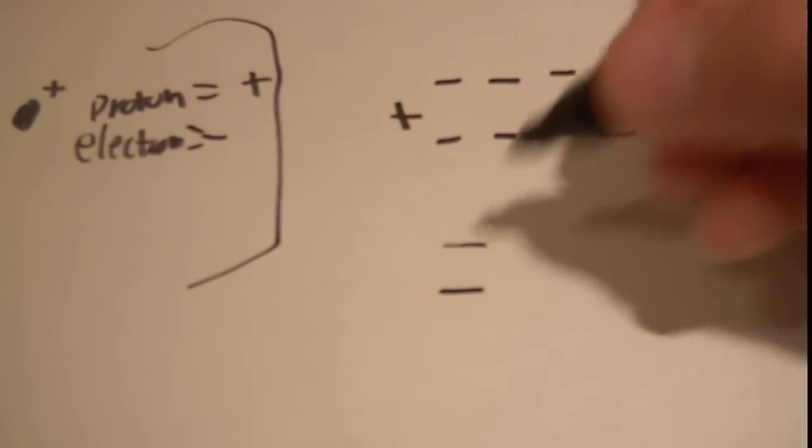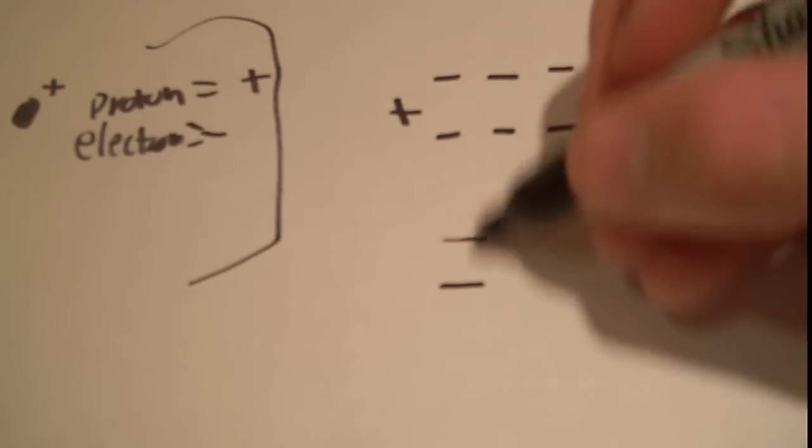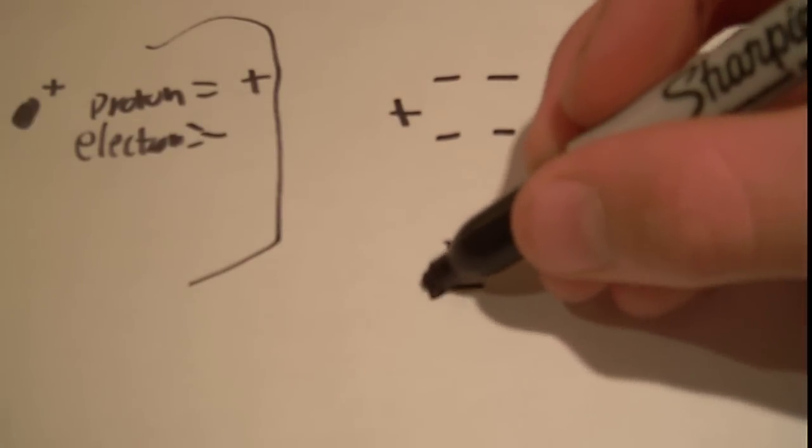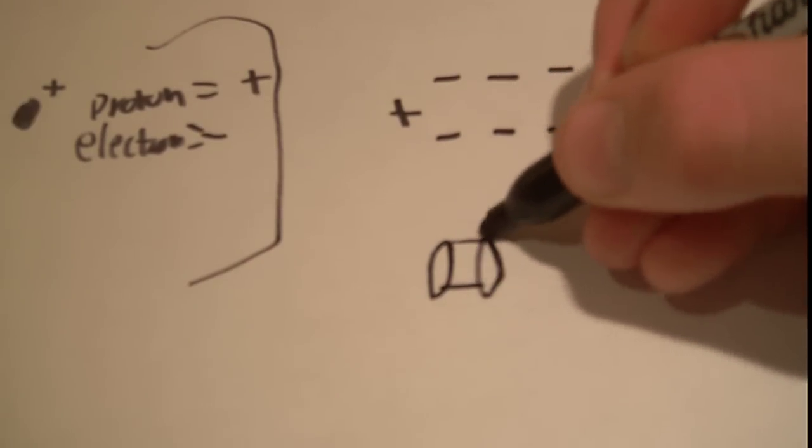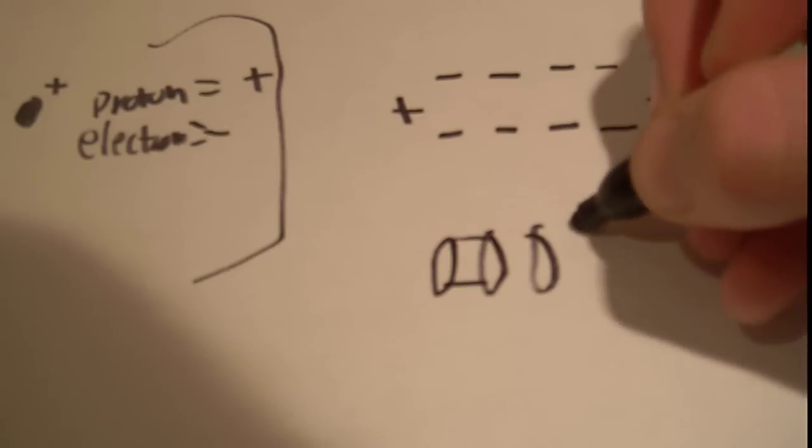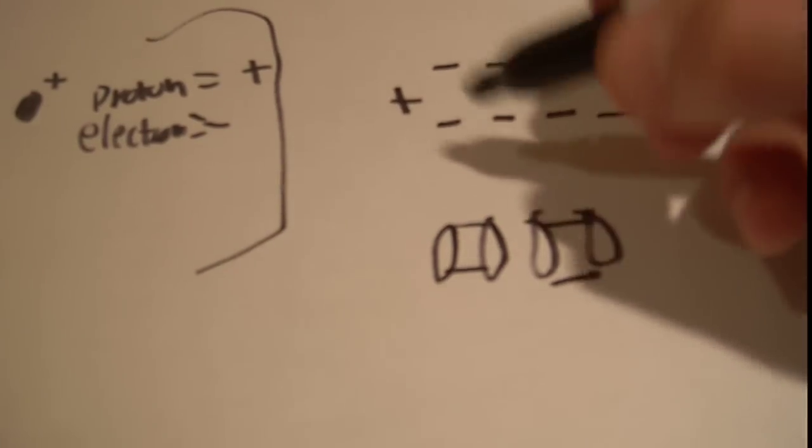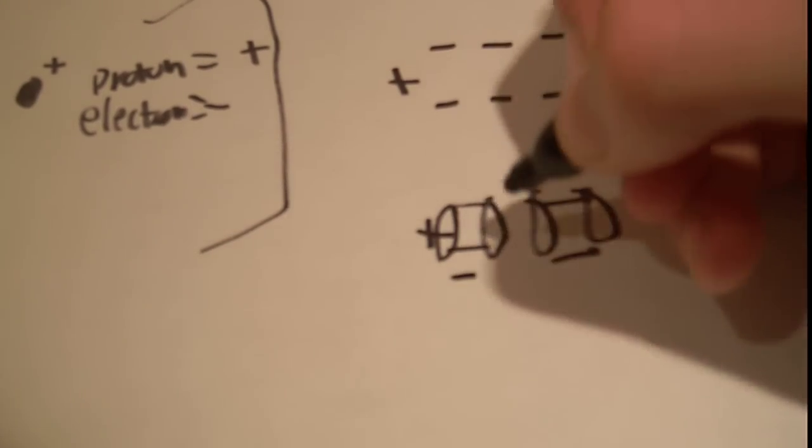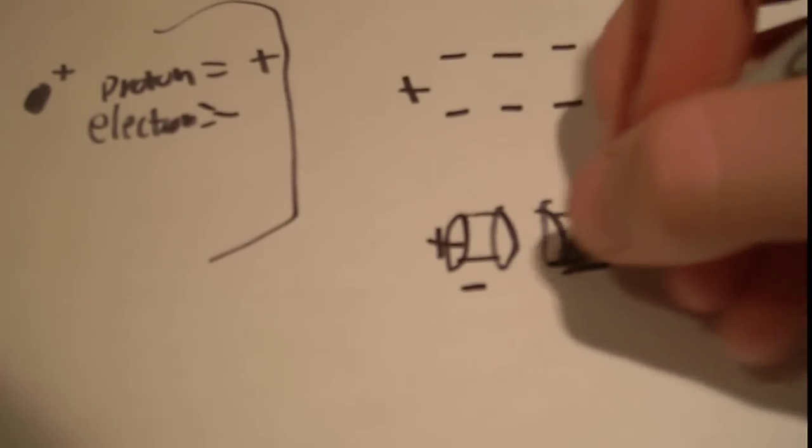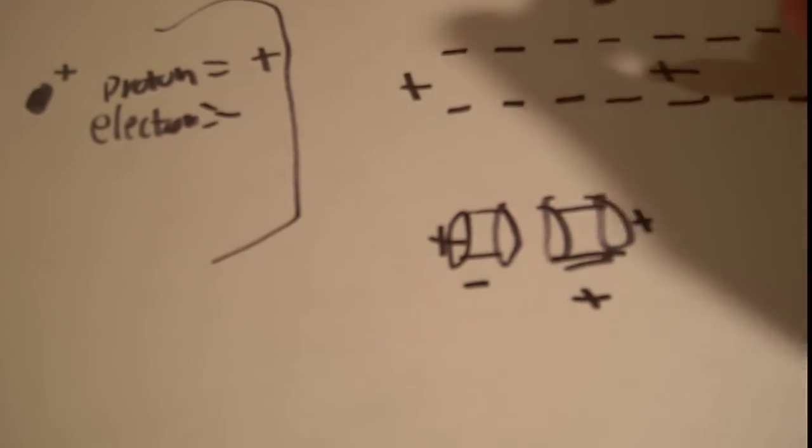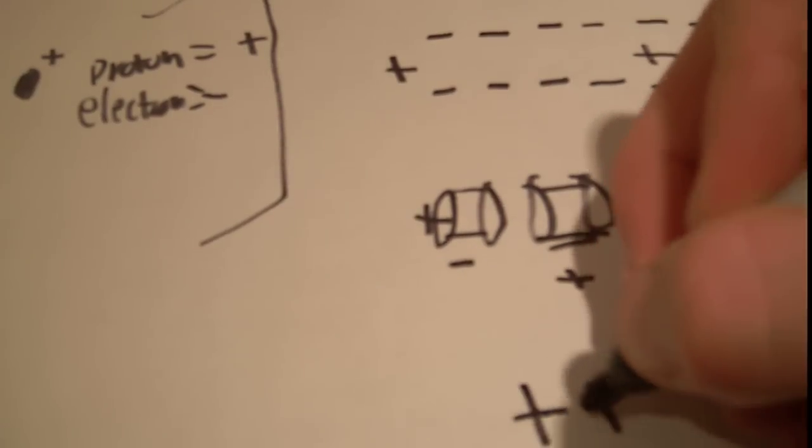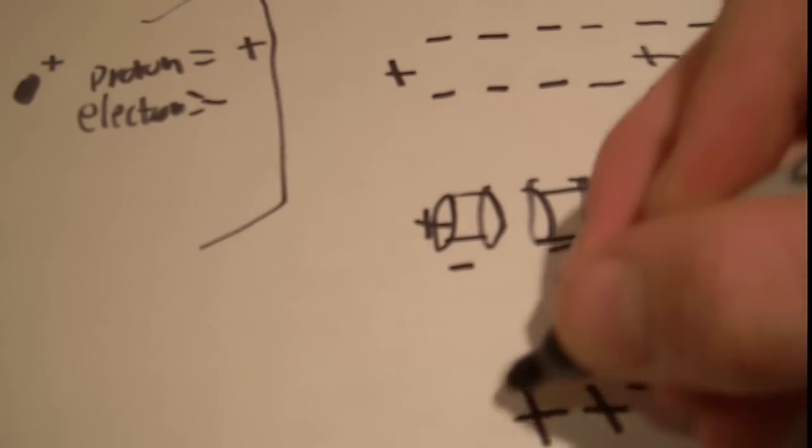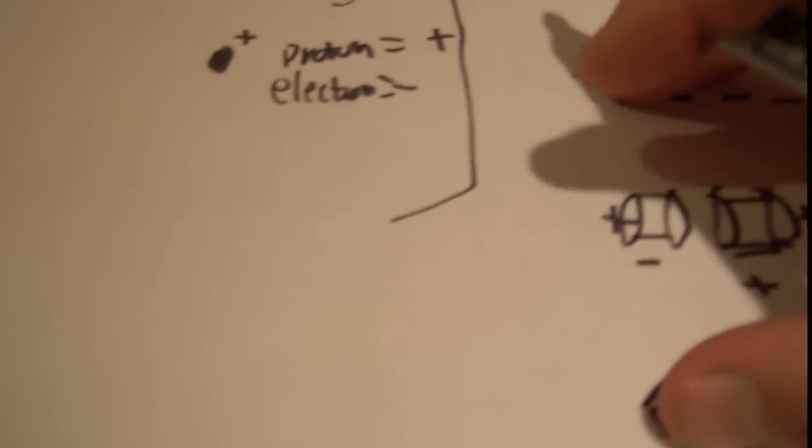So in particle accelerators, the way they do it is they have like a ring, right? Here, you have a ring, and then you have another ring here. And what they do is when the proton is coming in, they have it be negative. And when a proton is going out, they have it be positive to push it away, right? Because opposites repel. So I mean, that's the way particle accelerators work.